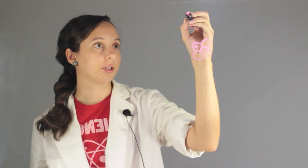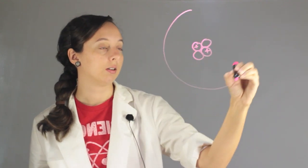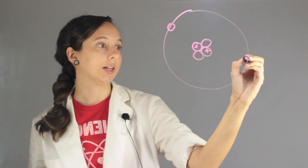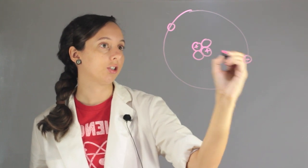Circling around the nucleus are two electrons, both with a negative charge.